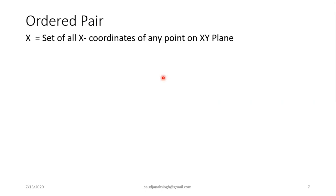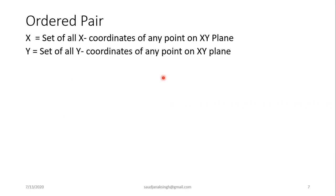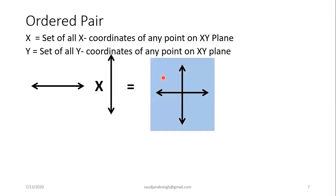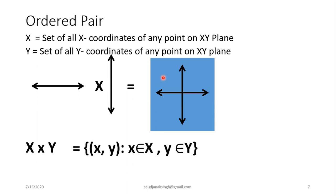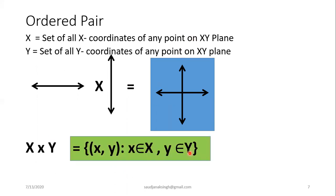In the same way, we can construct another example of the Cartesian product. Let set X be the set of all x-coordinates of any point on the X-Y plane, and set Y be the set of all y-coordinates. Then their Cartesian product X cross Y gives the whole X-Y plane — the set of all ordered pairs (x, y), where x is the x-coordinate taken from set X and y is the y-coordinate taken from set Y, representing every point on the plane.